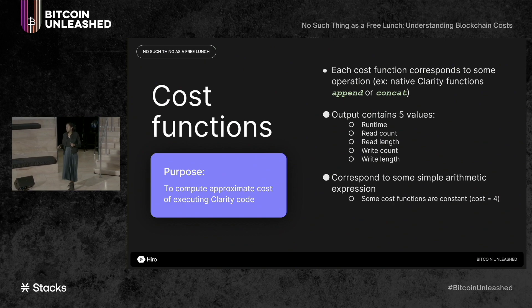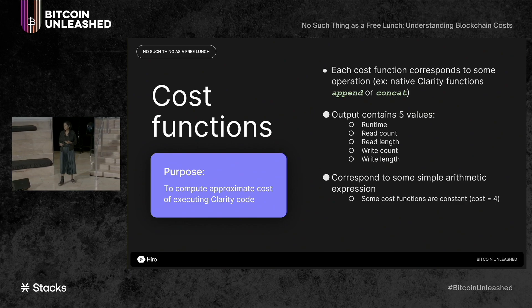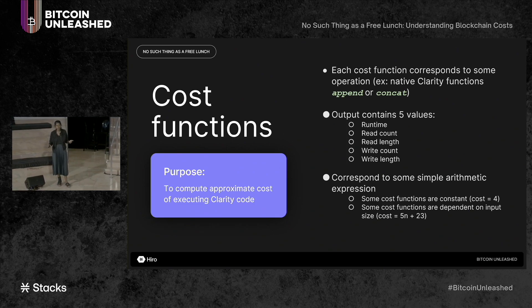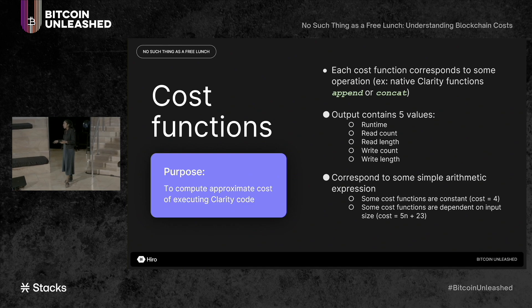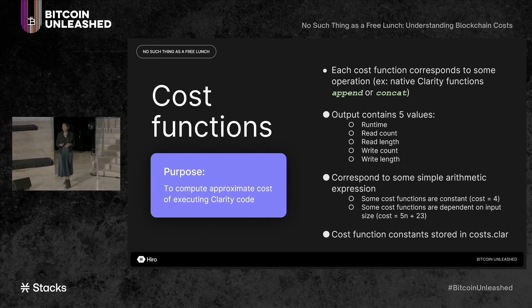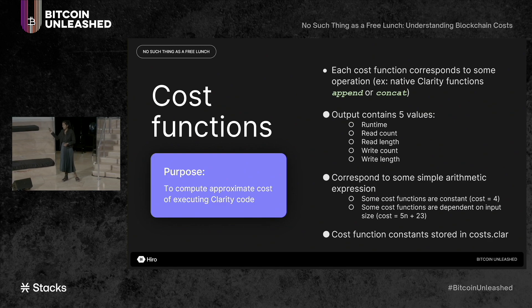These cost functions correspond to simple arithmetic expressions. Some cost functions are constant — you can imagine some Clarity functions do a fixed number of database reads, so the cost function for read count might just be the number four. Other cost functions are dependent on input size. For Clarity operations that take in lists, the actual execution time depends on the size of the list, so the cost function might take a linear form like 5n + 23, where n is the size of the input list. All of these cost functions and their constants are stored in a Clarity contract called cost.clarity, which is initialized in the genesis block.